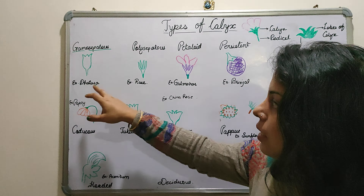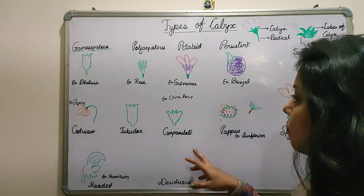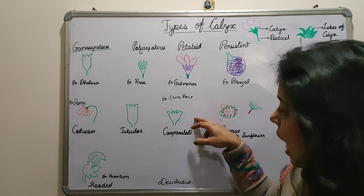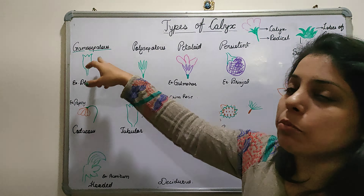Next is Campanulate calyx. Campanulate is the condition when sepals get fused with each other in such a way that the ultimate structure gives the appearance of a bell. This condition can be seen in China rose. It is a subtype within the gamosepalous category.